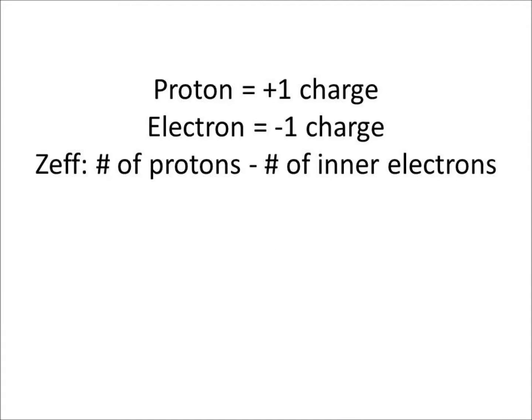Electrons and protons have opposite charges. If, hypothetically, a proton is plus 1, then the electron would be a minus 1 charge. Therefore, to find the effective nuclear charge, you would subtract the number of electrons on the inner shells from the protons.